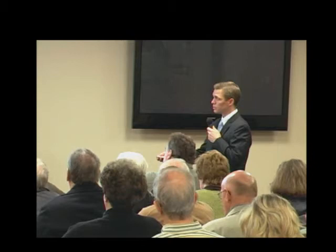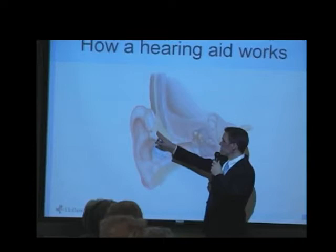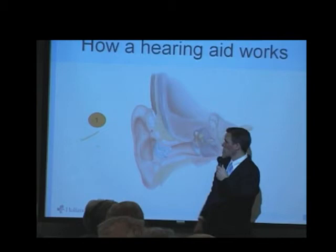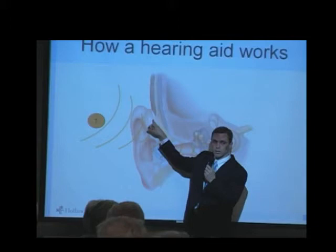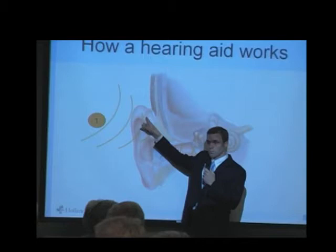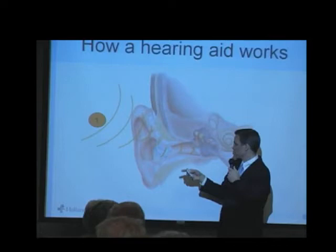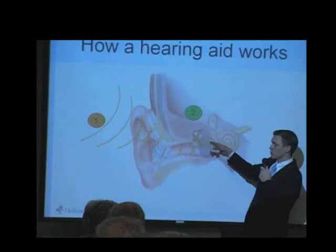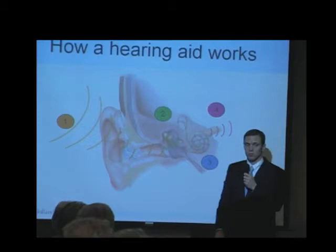How does a hearing aid work? The hearing aid can sit behind your ear or somewhere around your ear. Sound waves come in and hit a microphone on the hearing aid. The hearing aid takes that sound and puts it into a speaker that sits in your ear canal. The sound goes down to your eardrum, and from there it's basically the same: the ear bones move, the plunger moves in and out, the fluid wave goes down the cochlea, and it goes up the nerve to your brain.